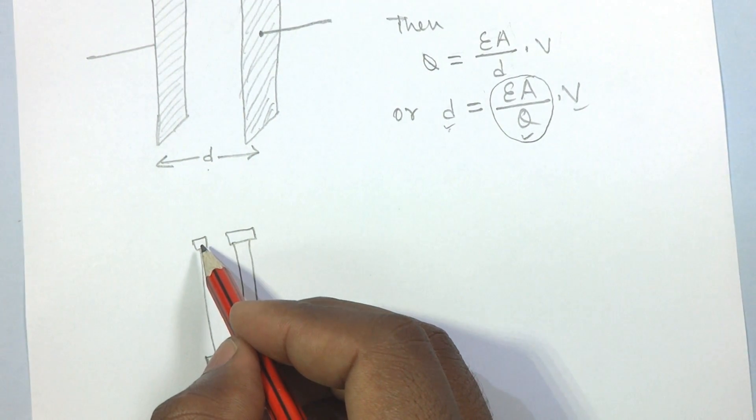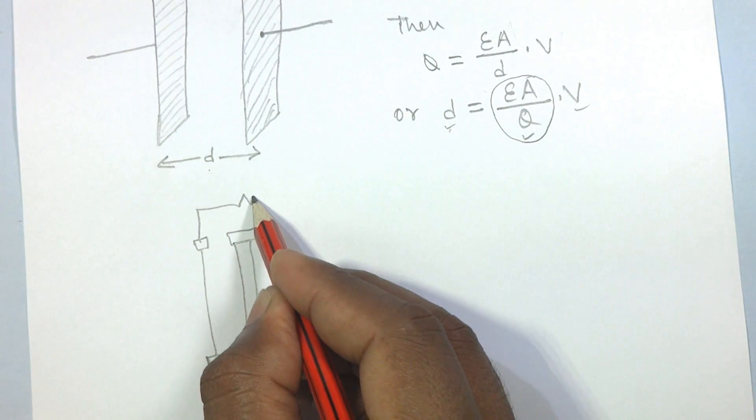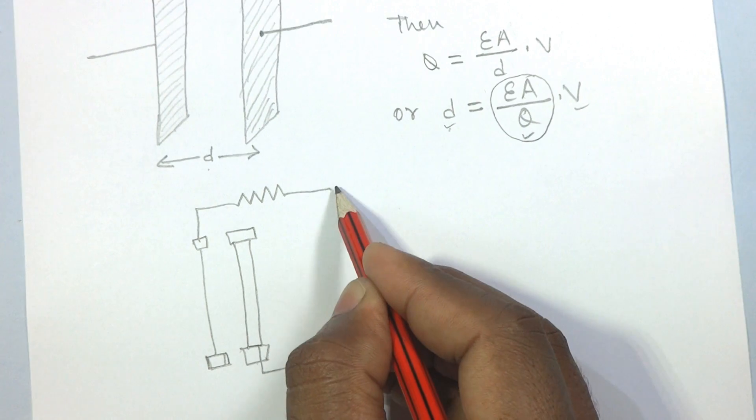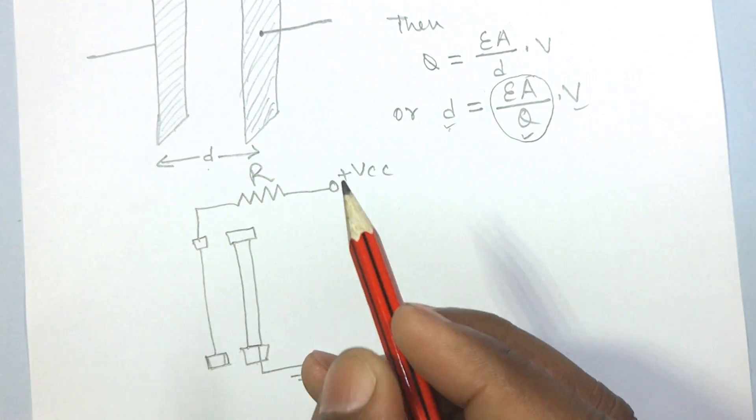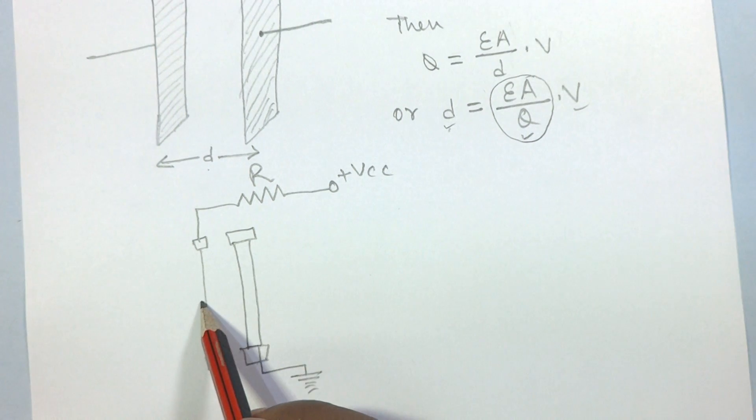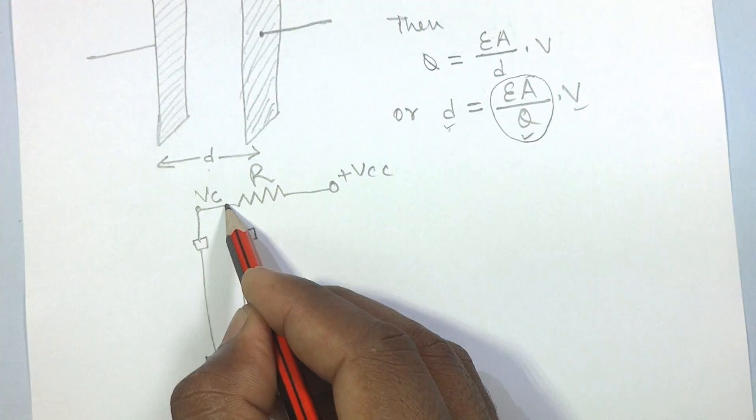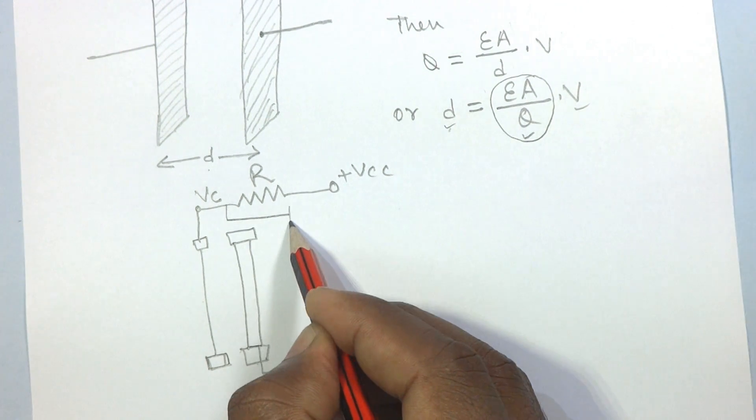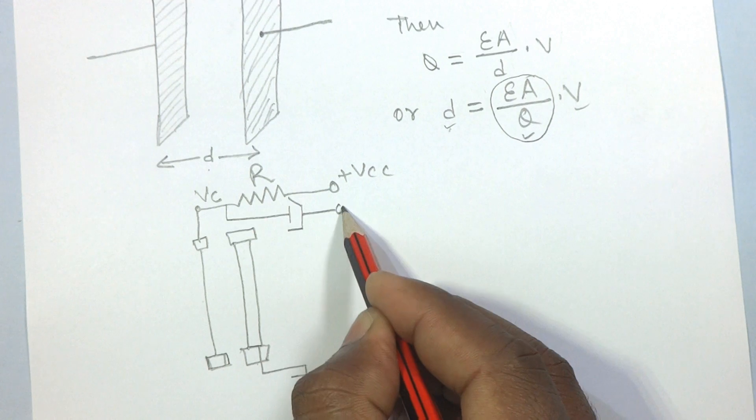The front plate is connected to the positive voltage supply through a resistor R. This capacitor will be charged through this resistor. Then there will be a fixed voltage across this plate, suppose this is VC. This is the coupling capacitor which passes AC signal and blocks DC component.